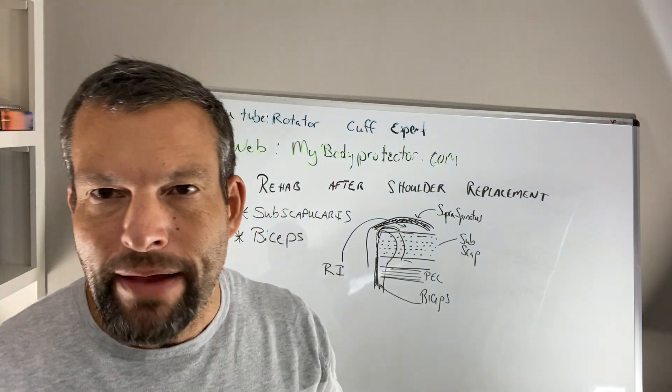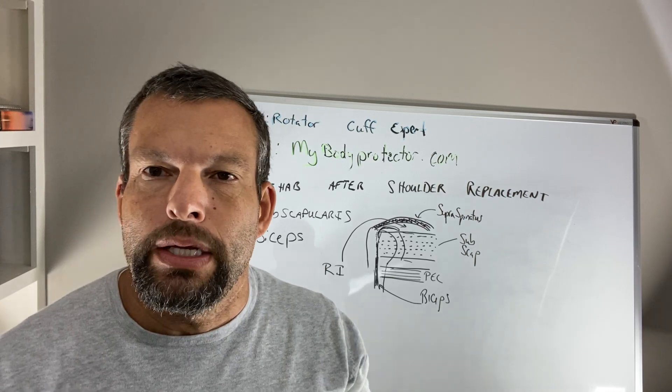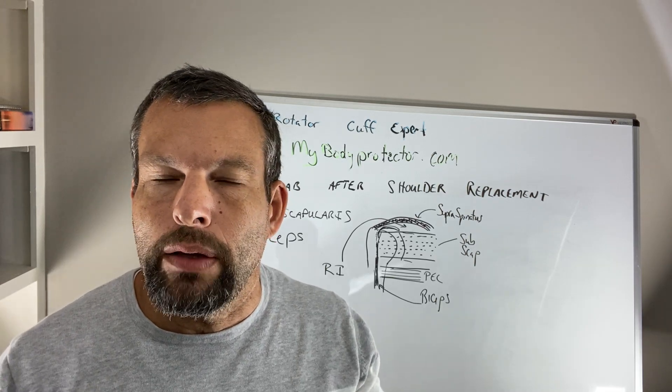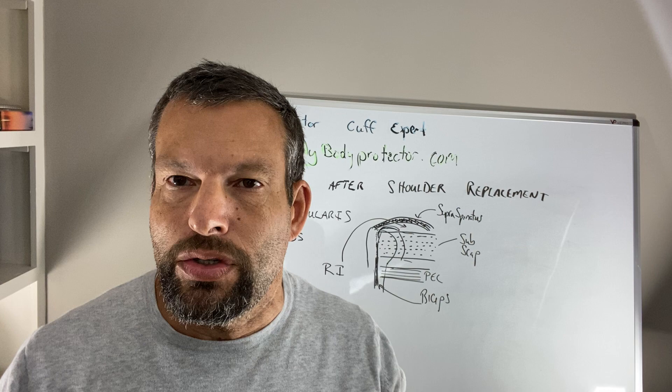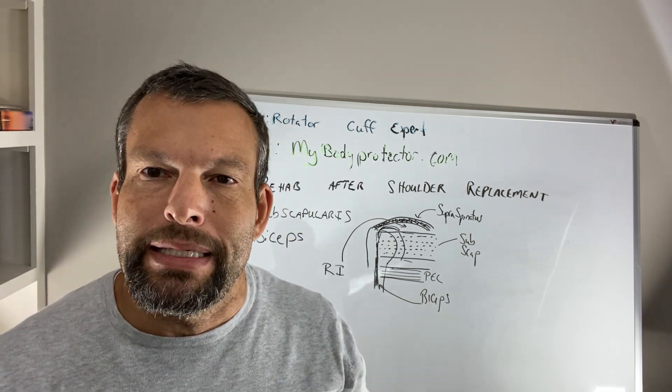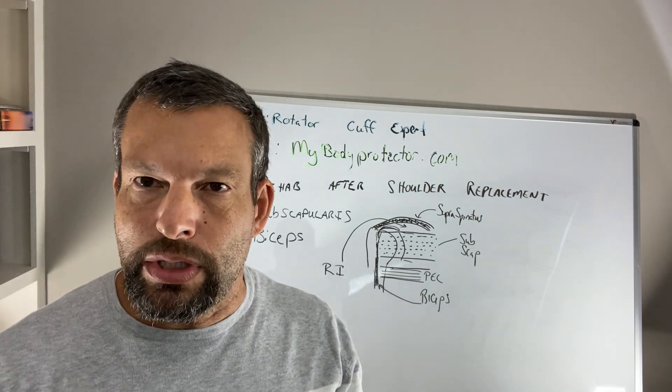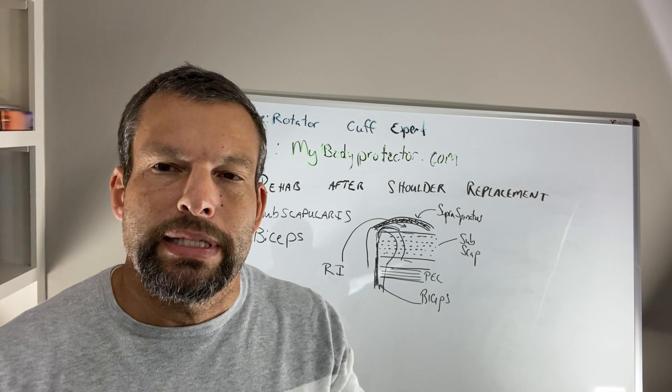Okay, so when we have a shoulder replacement, we replace the ball and the socket with metal and plastic. And so the question is what restrictions or what's PT like afterwards? So the biggest thing about PT afterwards is usually actually a little bit simpler than actually having a rotator cuff repair, which is interesting because you think it'd be harder. It's a little bit simpler.